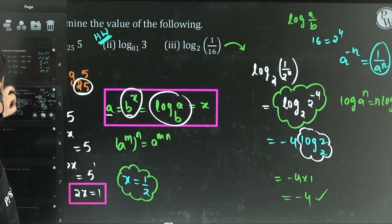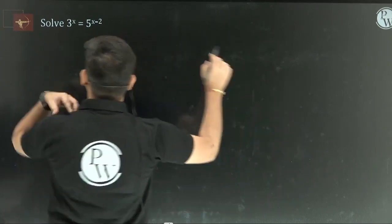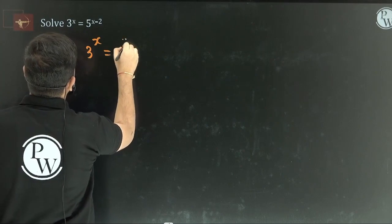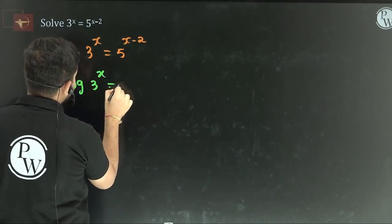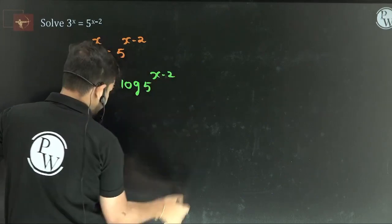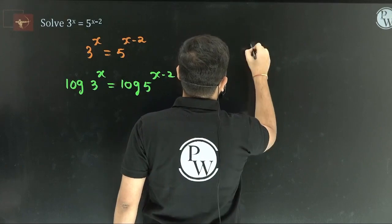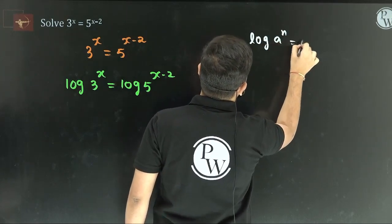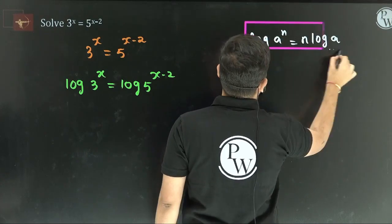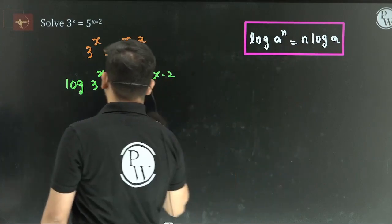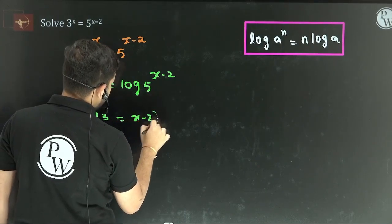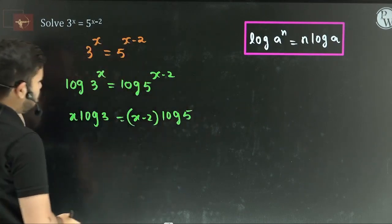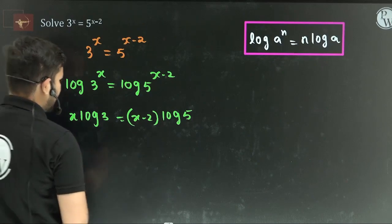Second question for homework — let me know the answer in the comment section. Now, next question: 3 to the power of x equals 5 to the power of x minus 2. This is another method. When x value needs to be calculated this way, apply logarithm to both sides. Both sides apply logarithm. So using the property log A to the power of N equals N log A, x times log 3 equals x minus 2 times log 5.